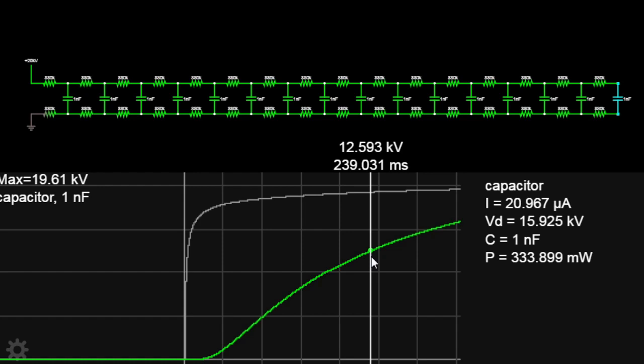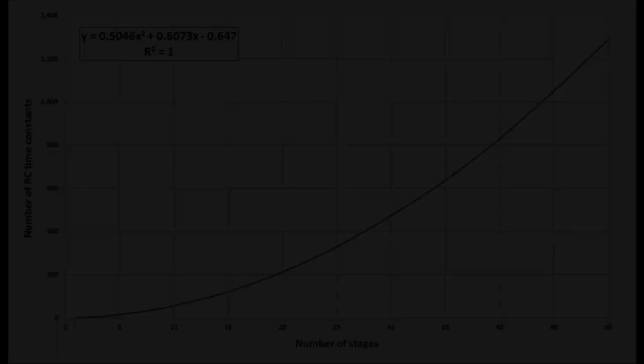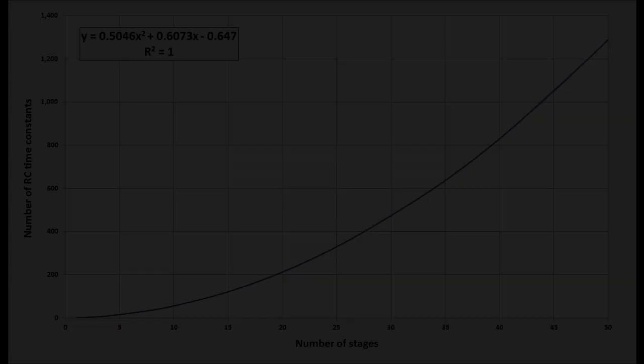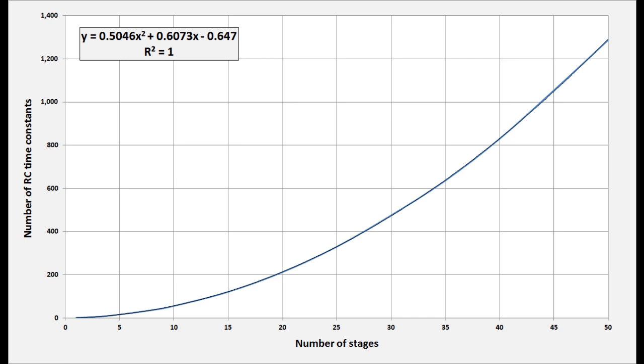After doing a bunch of simulations and curve fitting the results in Excel, I got the formula shown in the upper left. What this graph shows is the number of RC time constants it would take for the very last capacitor in a chain to reach one time constant of charge. As you can see, adding stages increases that number exponentially.